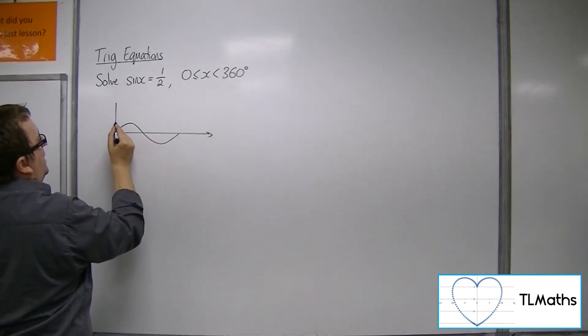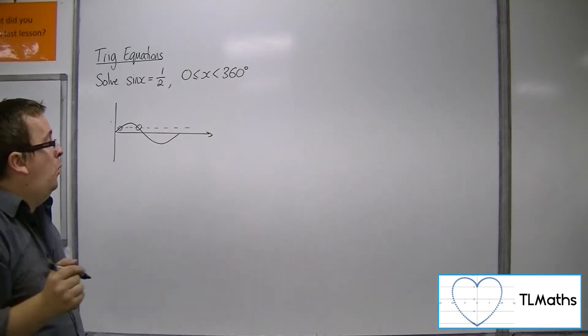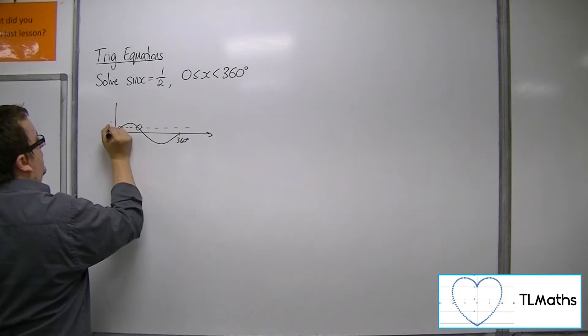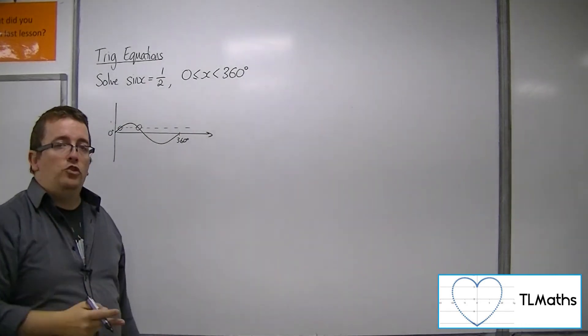Sine x equals a half. Now because the sine curve goes up to 1, a half will be a horizontal line, and you can see that it's going to cross the sine curve twice between 0 and 360 degrees. So that means there are two solutions.